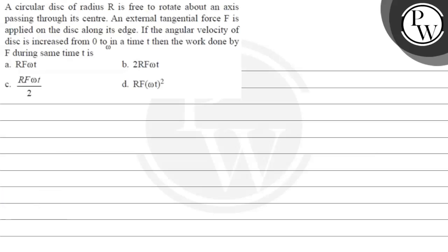Let's read this question. A circular disk of radius R is free to rotate about an axis passing through its center. An external tangential force F is applied on the disk along its edges. If the angular velocity of the disk is increased from zero to omega in a time t, then the work done by F during the same time t is - we need to find out the total work done.